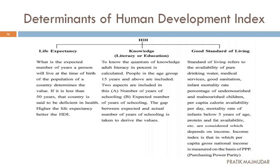The next determinant is knowledge, taken in two senses. One is literacy — how many people are literate in the country. The other is education — the expected number of years of schooling. How many years are you going to stay in school: 5 years, 12 years, 15 years, or 25 years? To know the actual quantum of knowledge, adult literacy percentage is calculated.